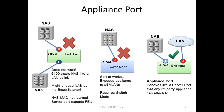Starting with UCS Manager version 1.4, a new port type was introduced called an appliance port. We've had uplink ports and server ports up to this point, so an appliance port was added to the portfolio. The motivation behind the appliance port was to make it easier to attach third-party appliances, such as a NAS filer, directly to the fabric interconnect.